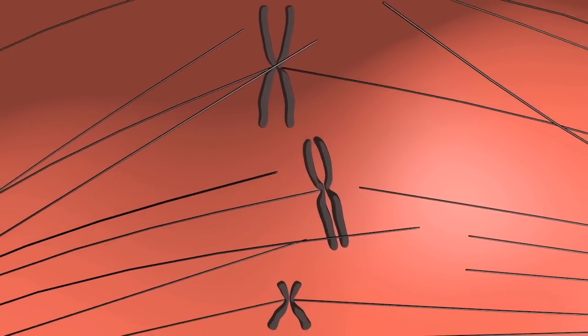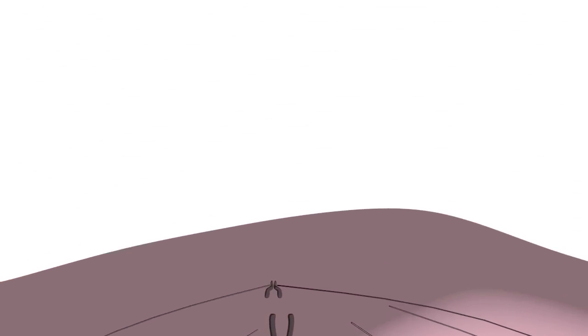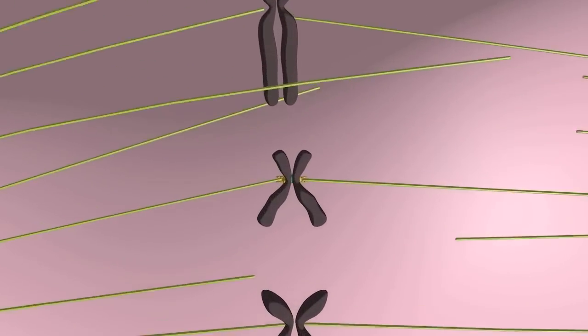Once all chromosomes bi-orient, the checkpoint signal is extinguished and mitosis can continue. As we noted earlier, chromosome bi-orientation ensures that sister chromatids will separate away from each other.